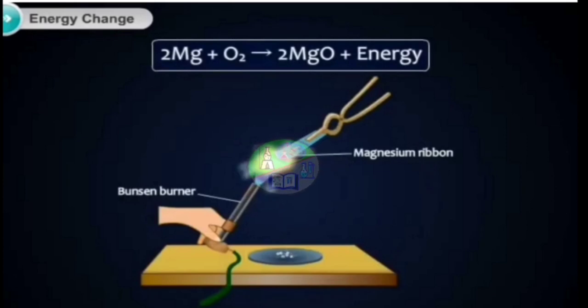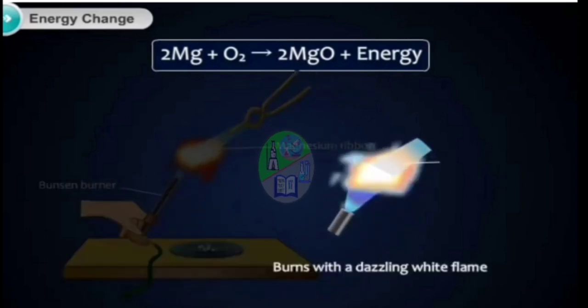When magnesium ribbon is heated from its tip in a flame of Bunsen burner, it catches fire and burns with a dazzling white flame.